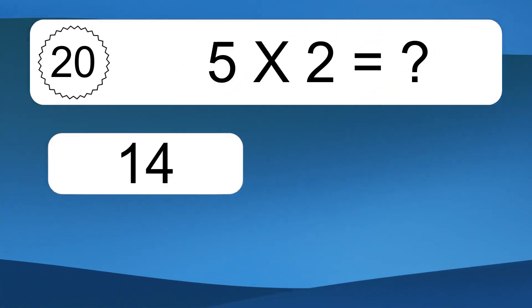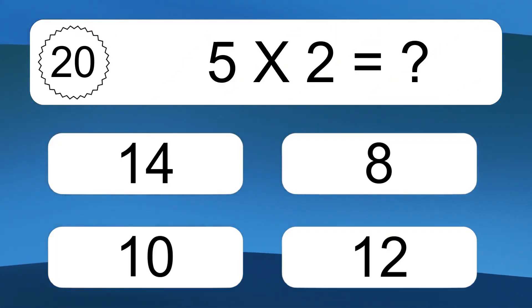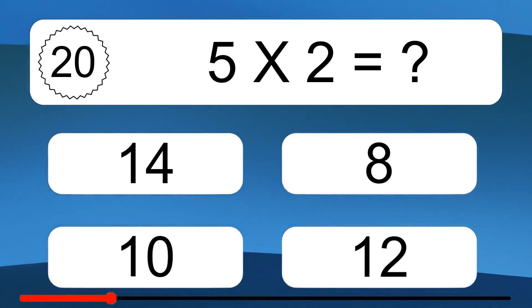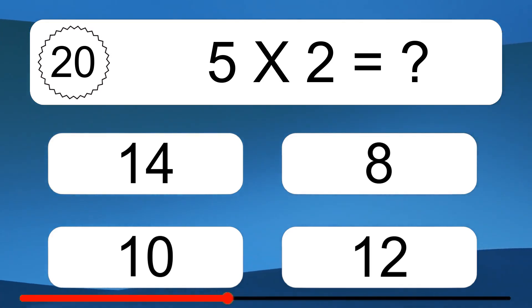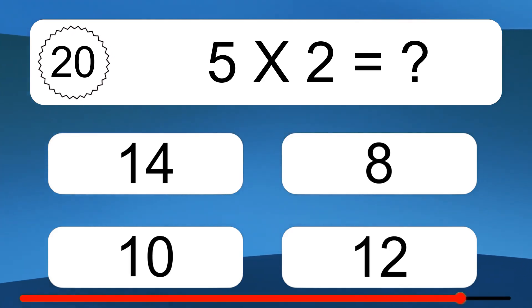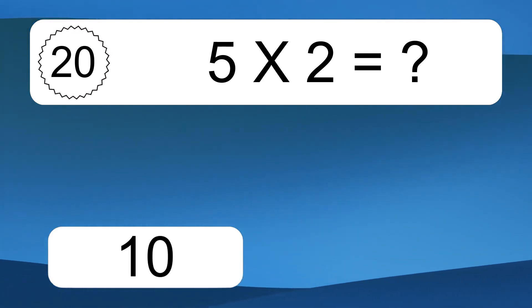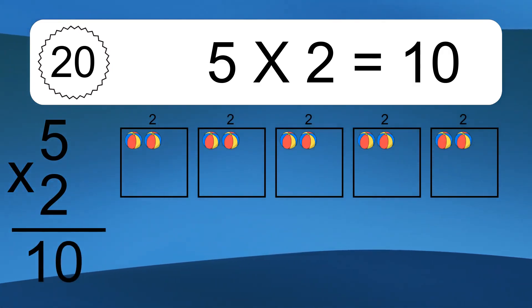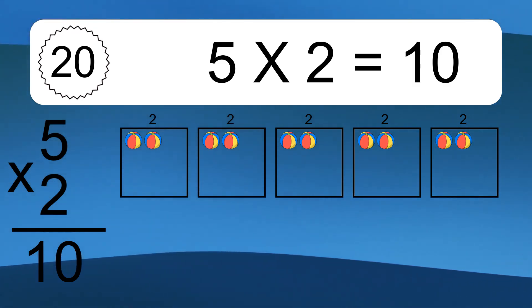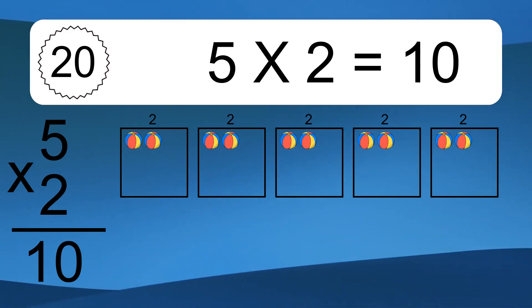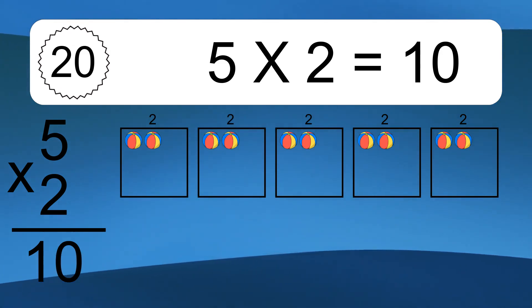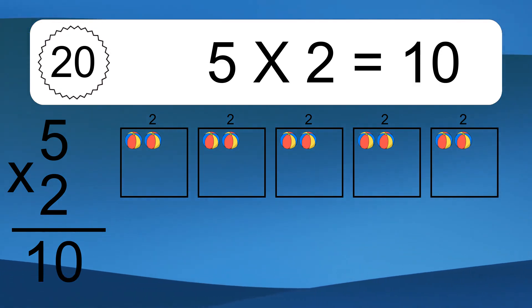5 times 2 equals what? 5 times 2 equals 10. We have 5 boxes, and each box has 2 colorful balls inside. If you count all the balls in all the boxes together, you will have 5 times 2 balls. This equals 10 balls.